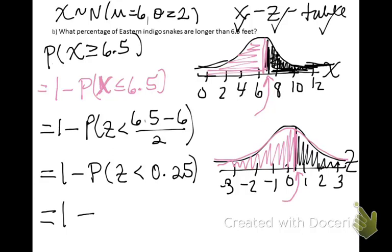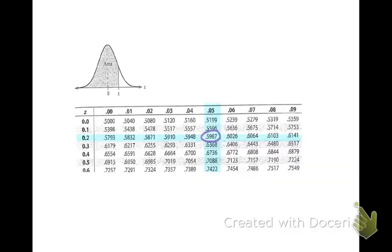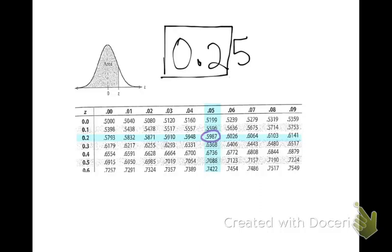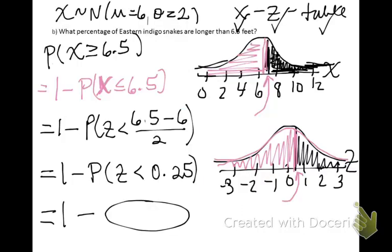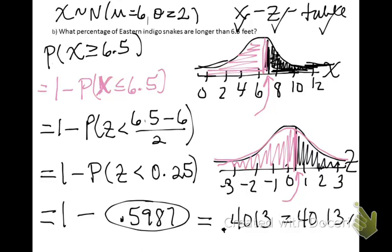Looking up 0.25 in the table: the ones and tenths position go here, the hundredths position here — so we look up 0.05. Lining these up, the probability is 0.5987. One minus this gives a final answer of 0.4013, or a 40.13% chance that a snake would be longer than 6.5 feet.